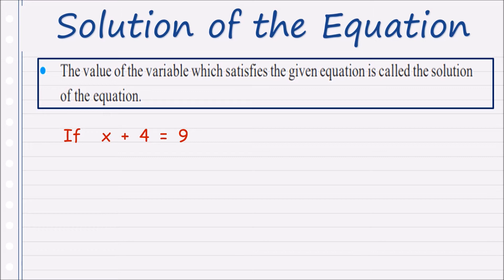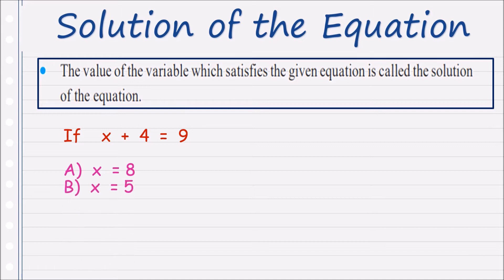Now we are going to find the solution of this equation. Option A: x equals to 8. To know whether this value is the solution or not, we substitute it in the equation. We replace x by 8, so we get 8 plus 4, which is 12. And 12 is not equal to 9, so x equals to 8 is not the solution of the given equation.